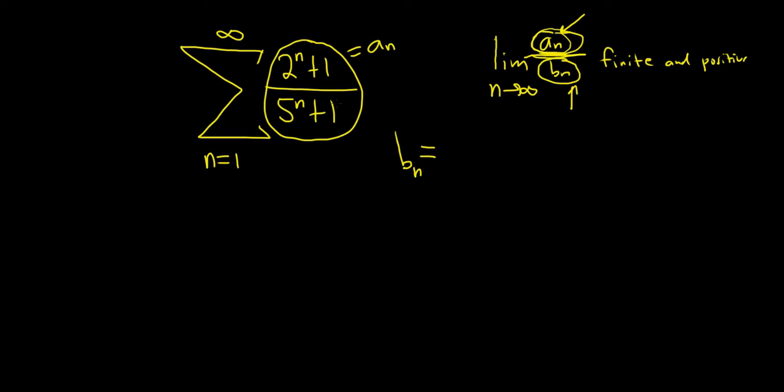n here is going to get really big. So adding 1 to a million is not going to make a big deal. So you can drop the 1's and just look at the leading terms. Most of the time, this is what you can do to find your b. You just look at the leading terms.